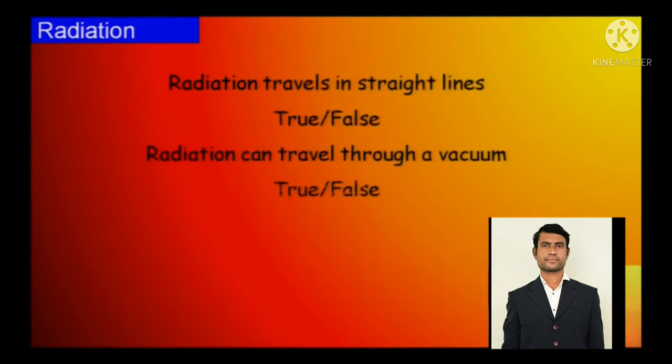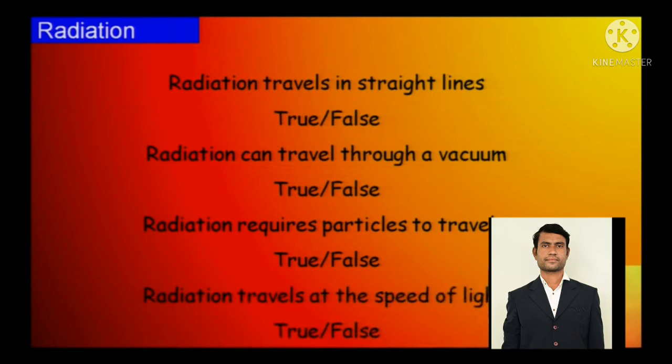Now these are certain questions. Radiation travels in straight lines, true. Radiation can travel through vacuum, true. Radiation requires particles to travel, false actually. Radiation travels at the speed of light, true.